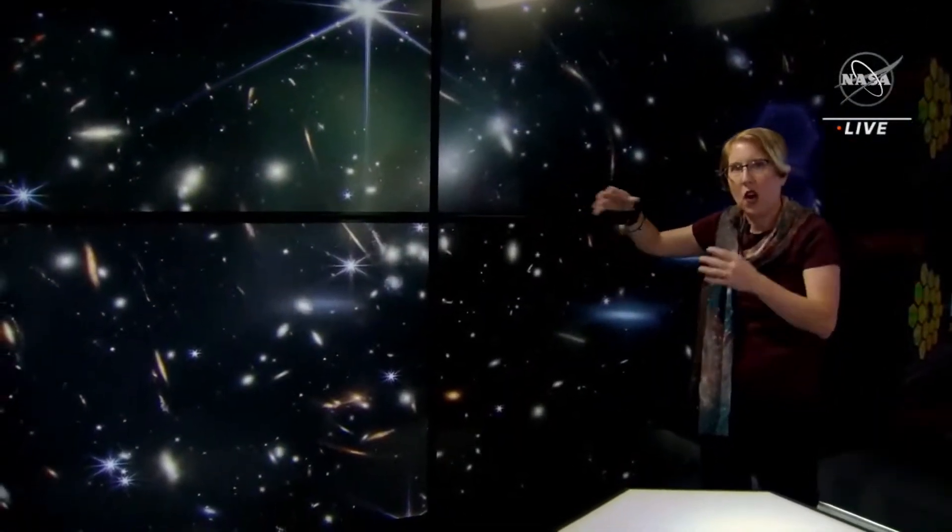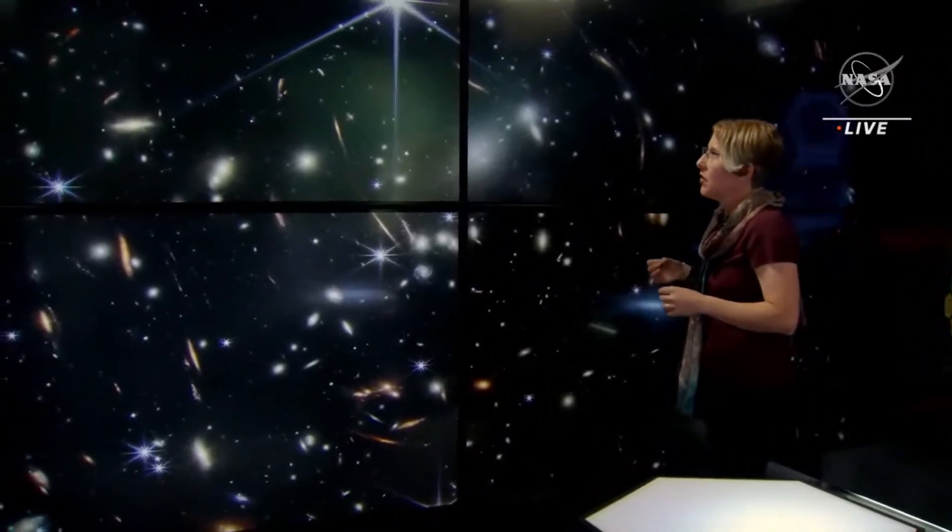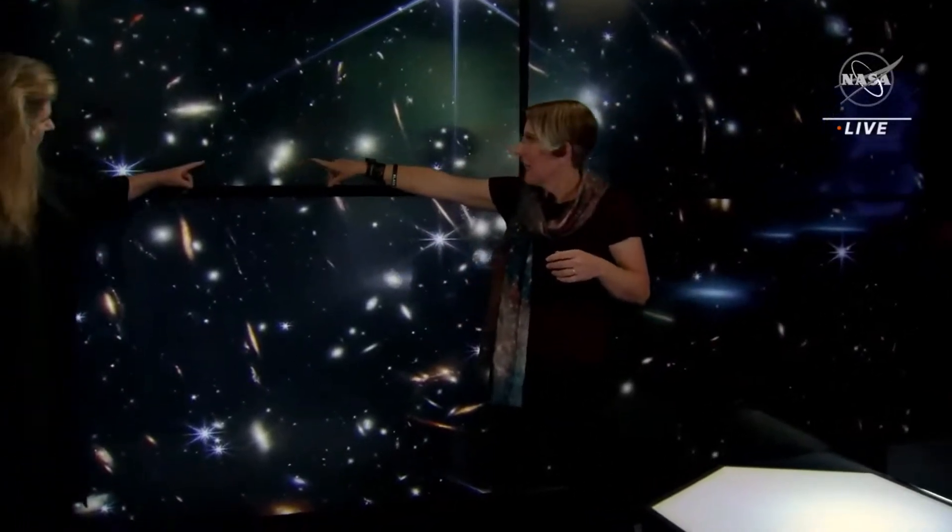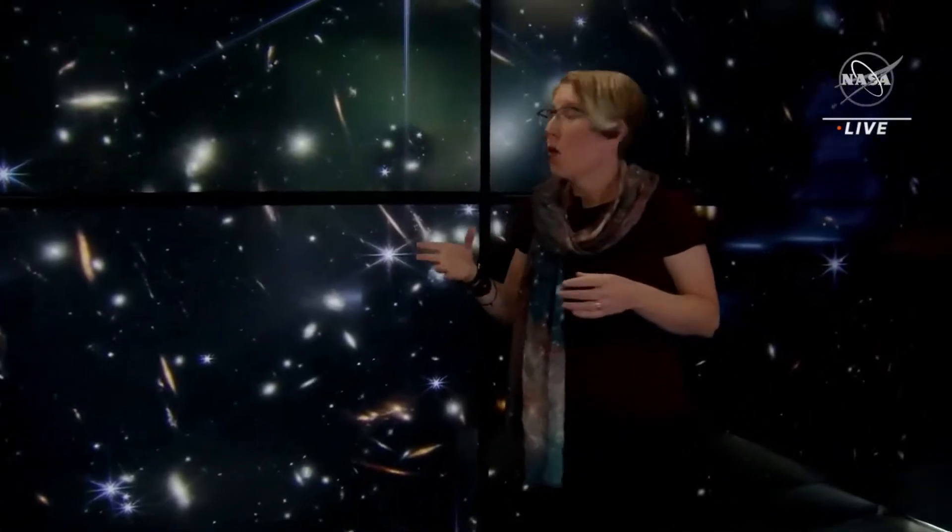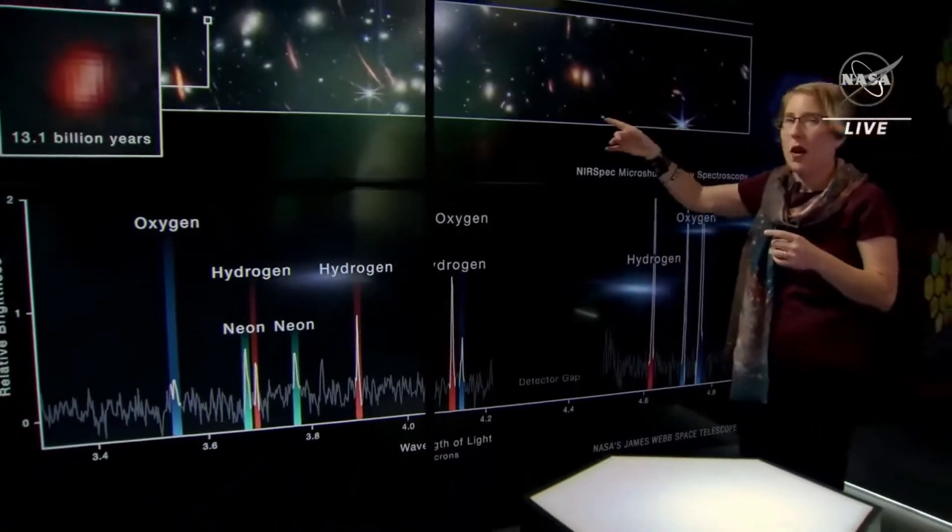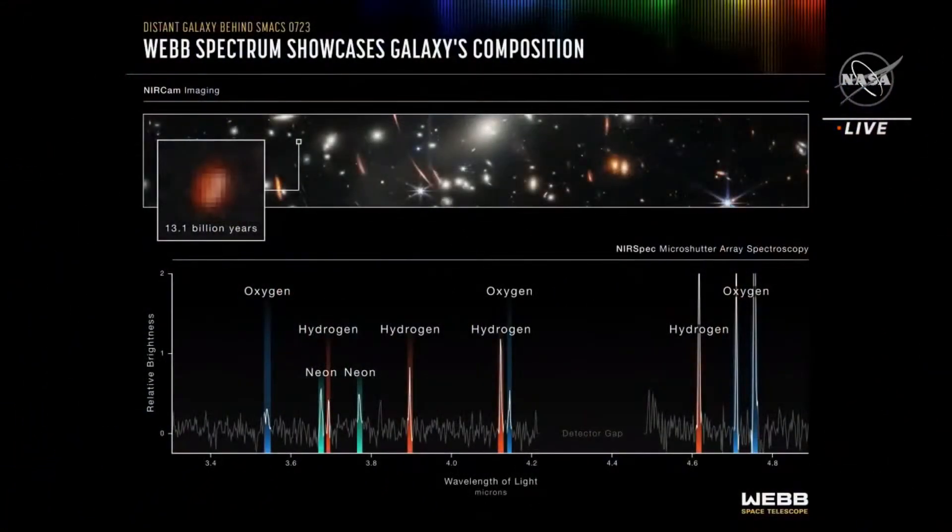The most distant of those are billions of years, we're seeing as they looked more than 13 billion years ago. Galaxies like that one right there, this little red guy. Webb got spectra to figure out what those galaxies are made of. And this is that one, we're seeing as it looked 13.1 billion years in the past, less than a billion years after the Big Bang.